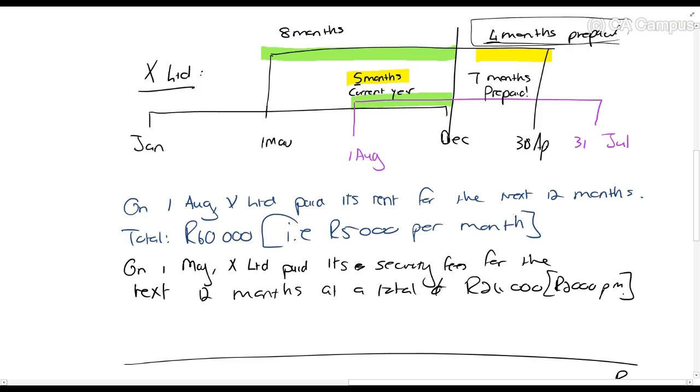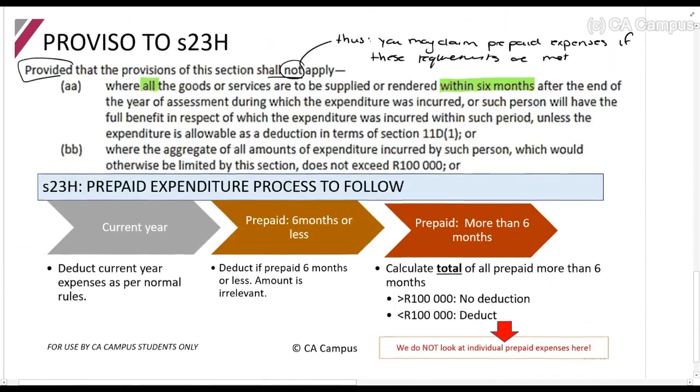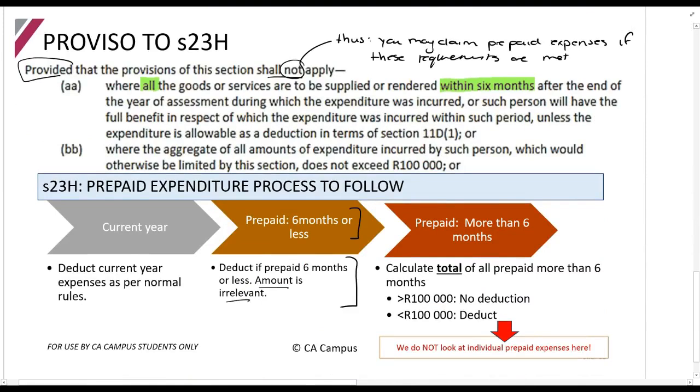In this example I've used, the moment that the prepaid portion is 6 months or less, so 1 month, 2 months, 3 months, 4 months, 5 months or 6 months, the moment this is one of those, you are allowed to claim it as a deduction, the full amount. That's what we see here. Deduct if the prepaid is 6 months or less. The amount is irrelevant, so it can be a billion rands that you've prepaid. Doesn't matter, you're allowed to claim it.